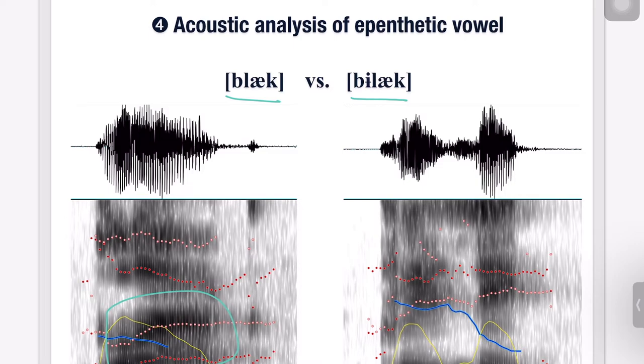While the one on the left displays one consistent formant band, which means one vowel, the other spectrogram consists of two separate formant concentrations, which means there are two vowels. What's more, from the spectrogram on the right, we can see that the length of the vowel æ is relatively shorter than that in the left spectrogram. The vowel æ on the right spectrogram appears to be as long as the epenthetic vowel ɨ.